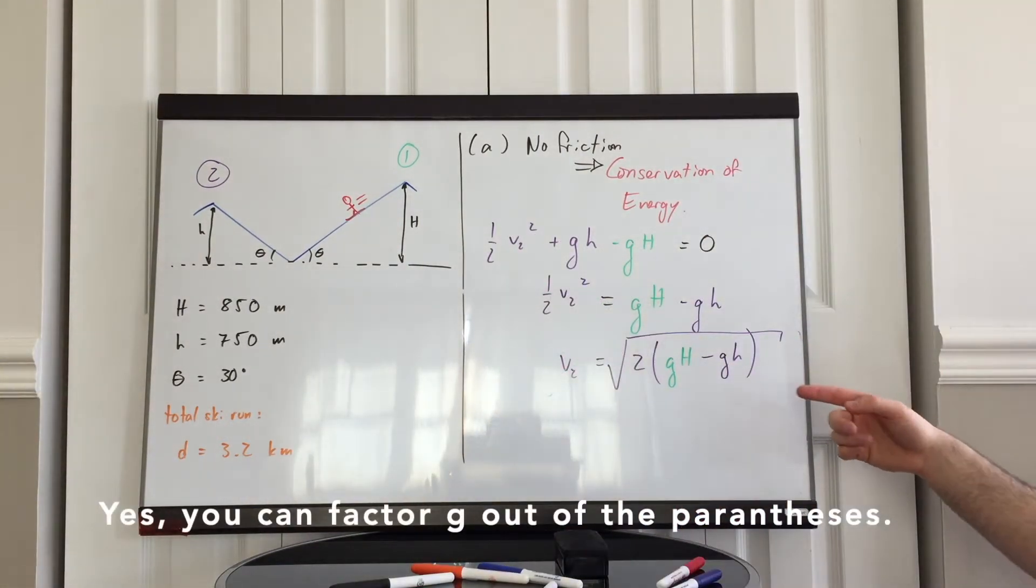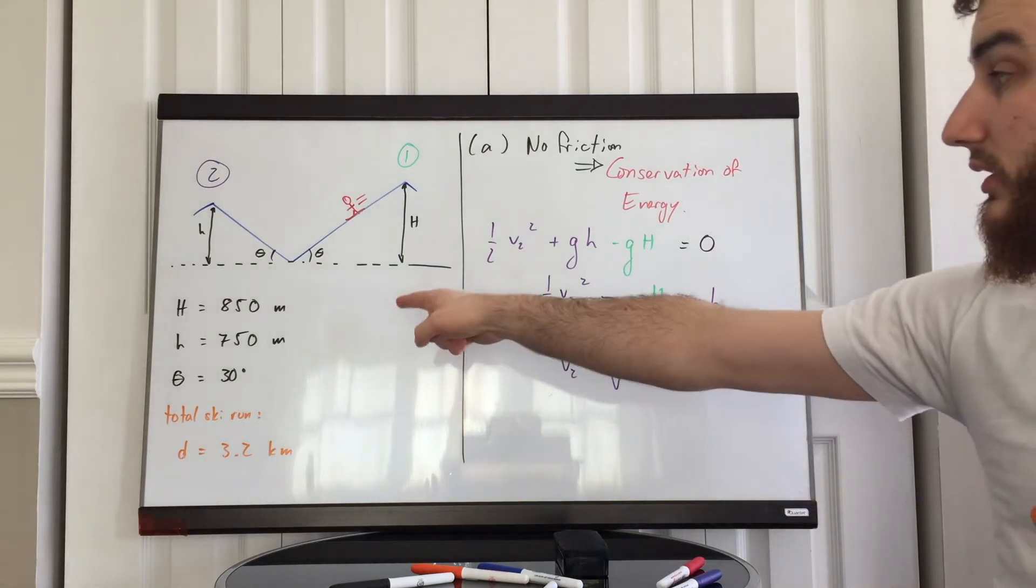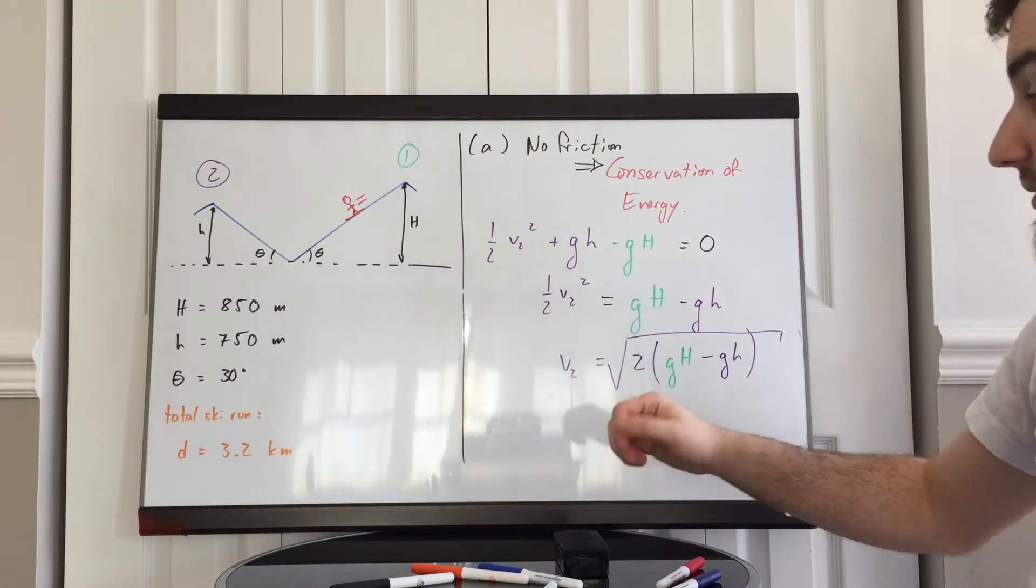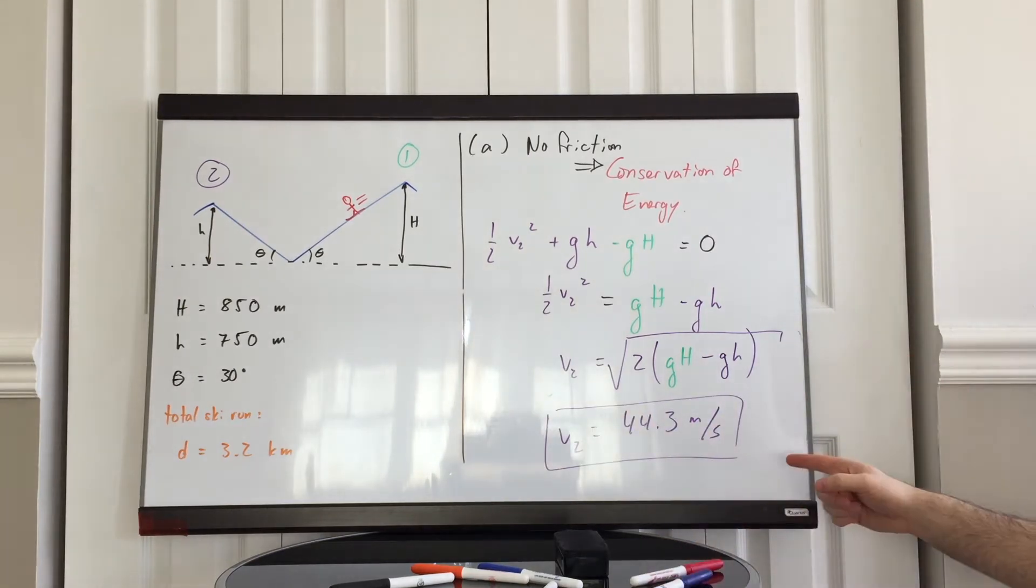Once you have this, you simply plug in your numbers. g is 9.8 meters per second squared. Big H is 850 meters. Small h is 750 meters. We get all of this. And that's the speed at which the skier reaches peak small h.